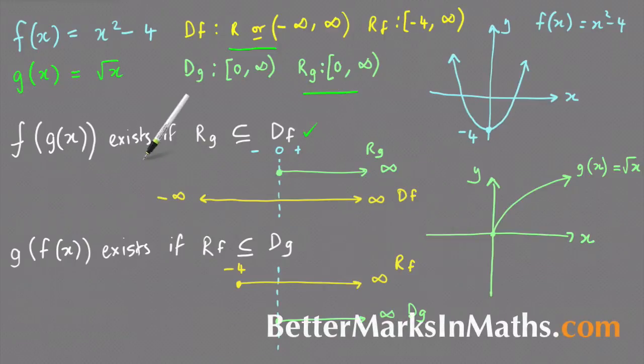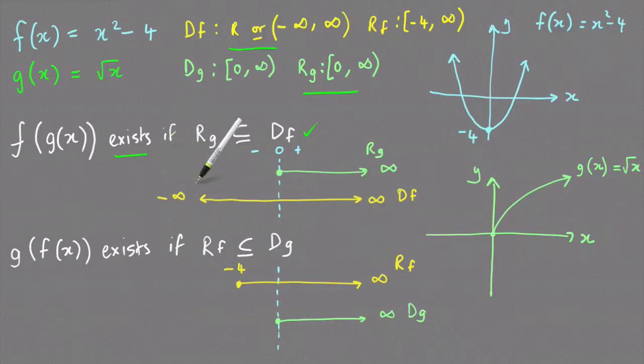Looking at g of f of x, the condition is: is the range of the function that's being substituted in, range of f, contained within the domain of the outside function? I haven't tested it yet. If that's true, then yes that will exist. So looking at the range of f, range of f is minus four to infinity, and I've drawn that here from minus four inclusive up to positive infinity.